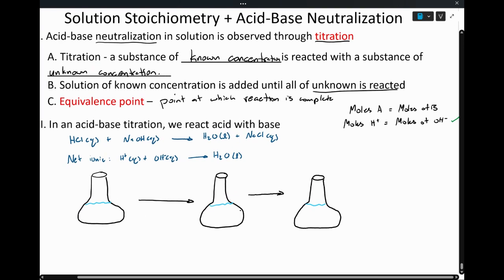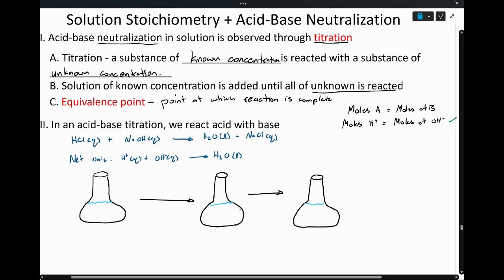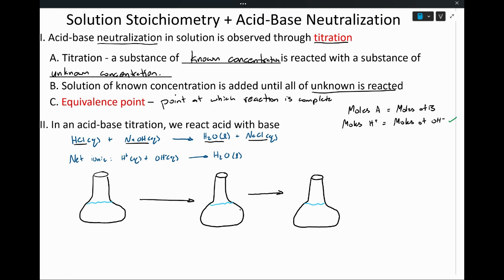So let's look at what this looks like. We're going to react an acid with a base — let's say we're doing a reaction between HCl and NaOH, and we produce H2O and NaCl as our products. Our net equation was H+ from HCl and OH- from NaOH coming together to produce water. For example, let's say that the unknown is my H+. I have some amount of H+ in here, I just don't know how much. What I'm going to do is slowly add hydroxide, OH-, to that.